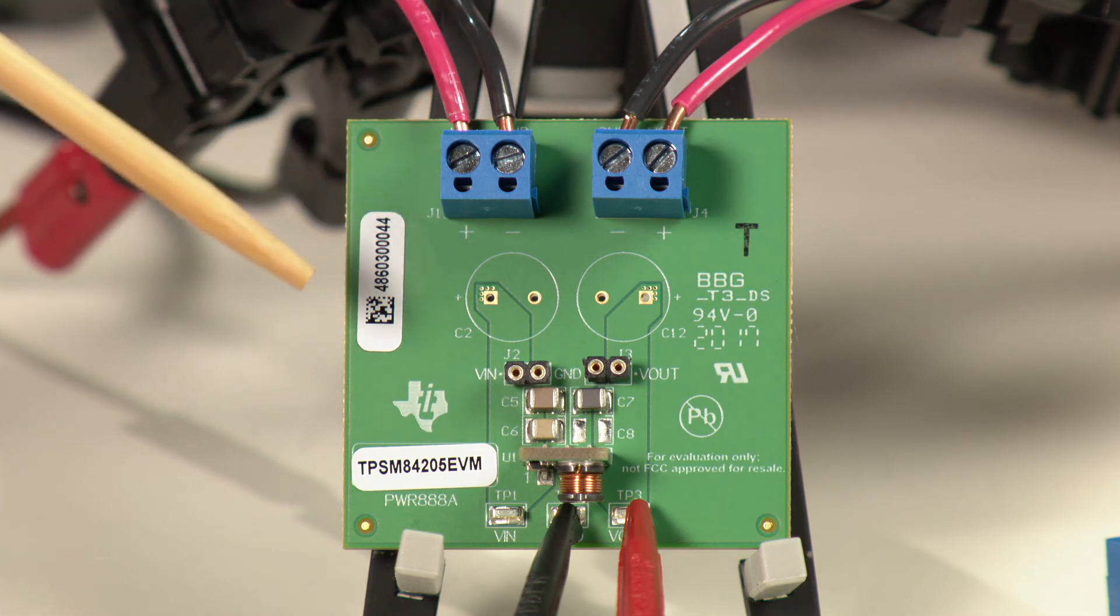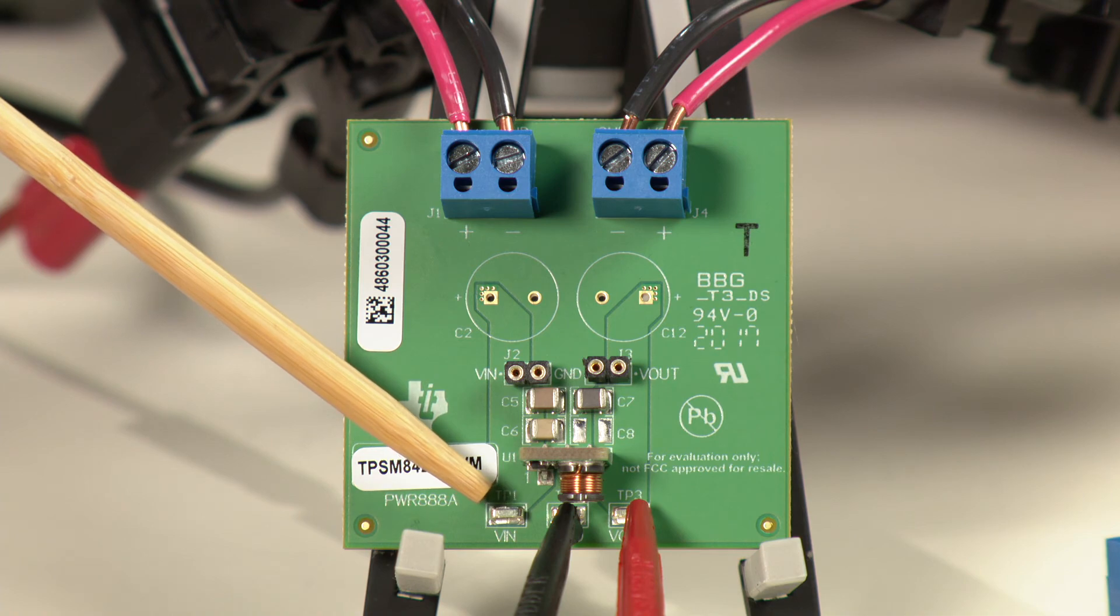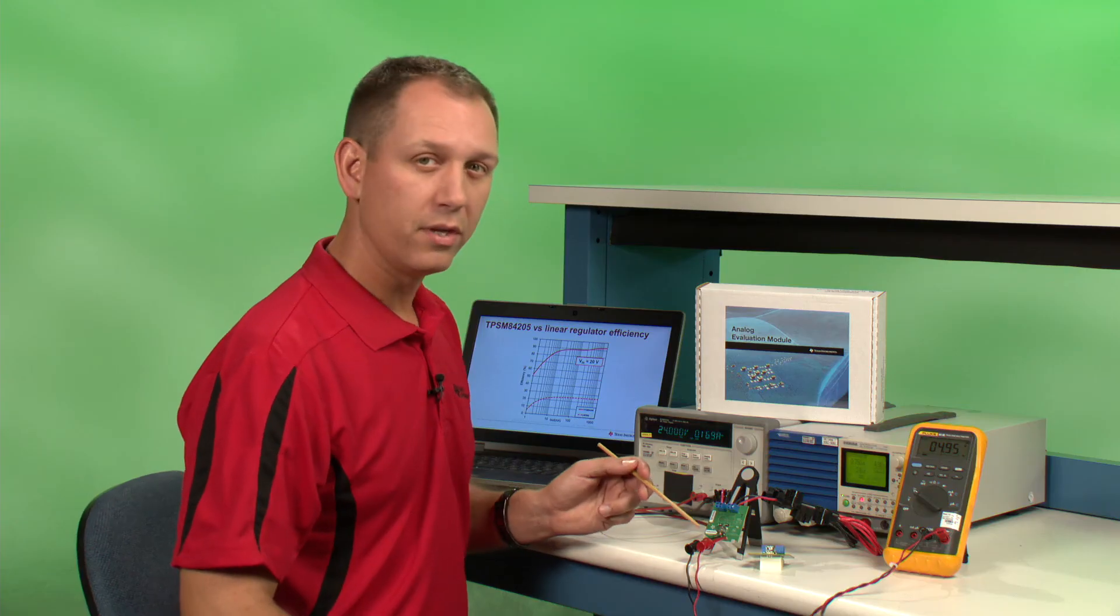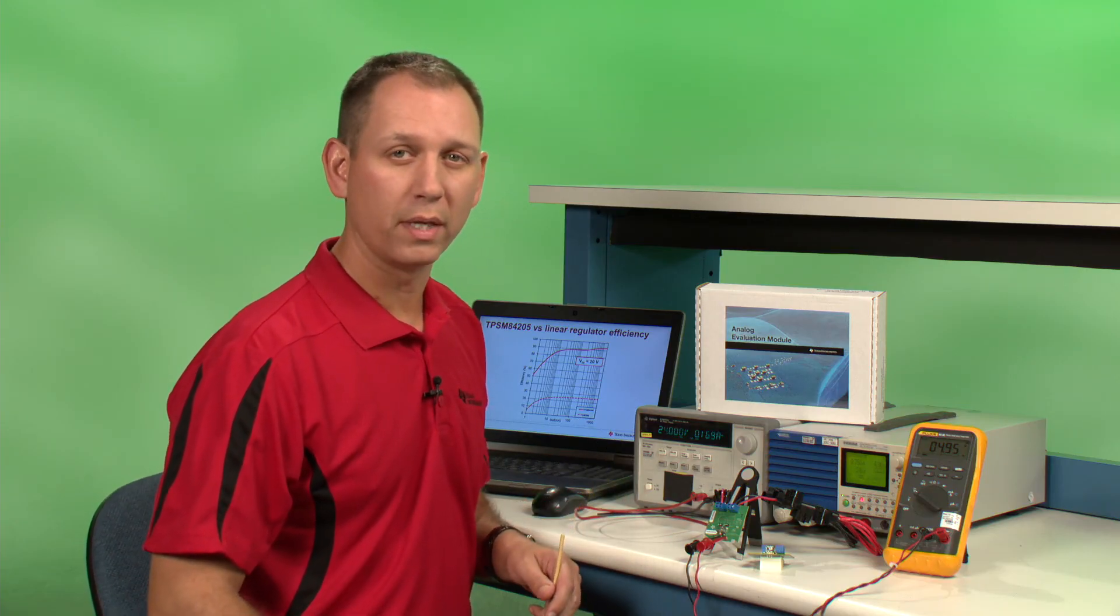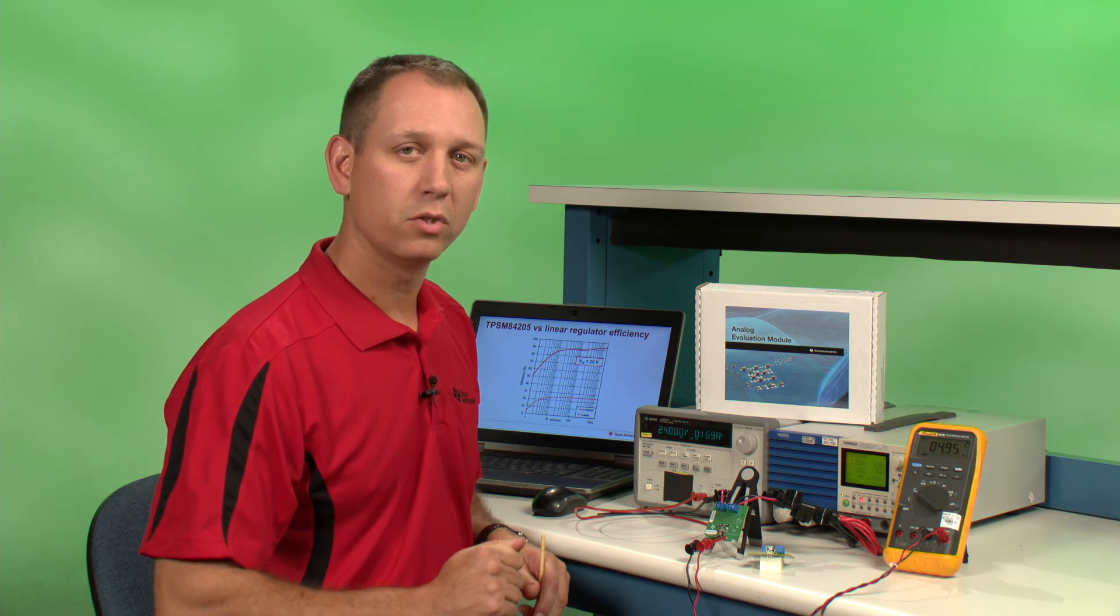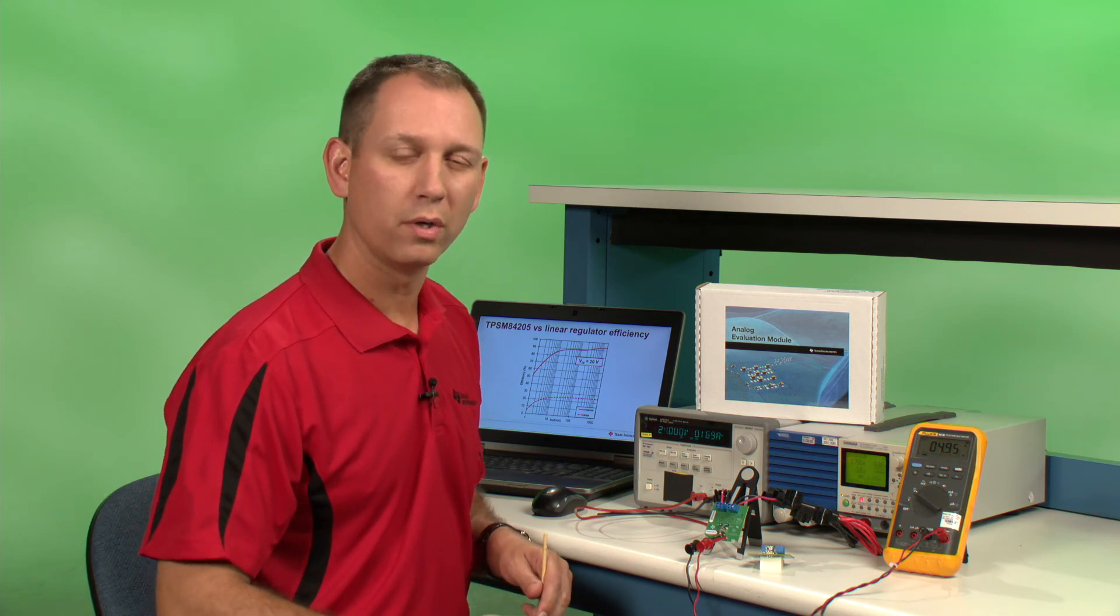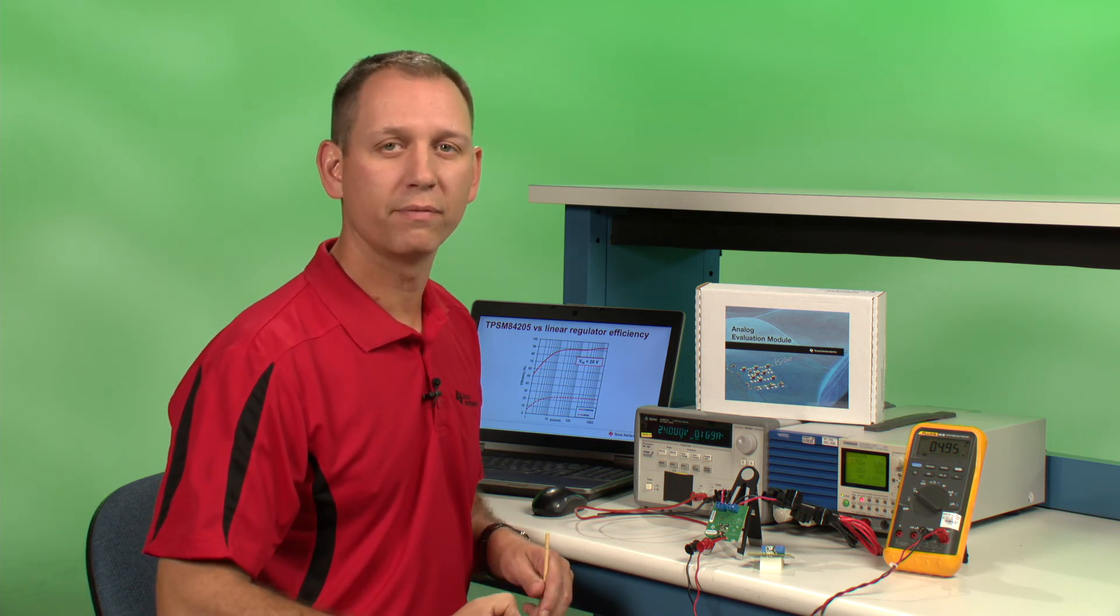There are also test points for monitoring input voltage and output voltage and these are meant to be connected to a digital voltmeter. They're not meant to be connected to your input voltage or your load because the traces aren't big enough to handle the current.